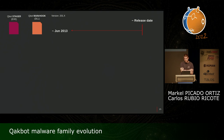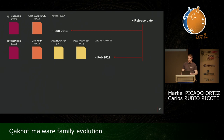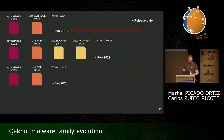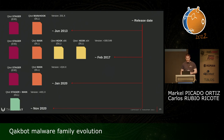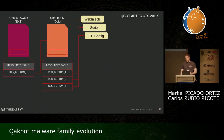The first version we have analyzed — version 201 — has two components: the stager and the main DLL. In the resources it has the main DLL, and the main DLL in its resources has the web injects, the script for updates, and the command and control config.